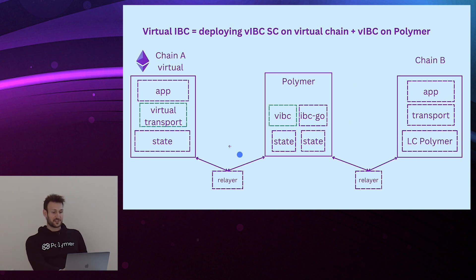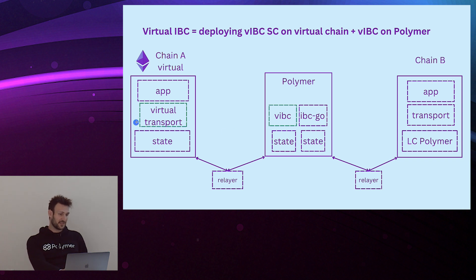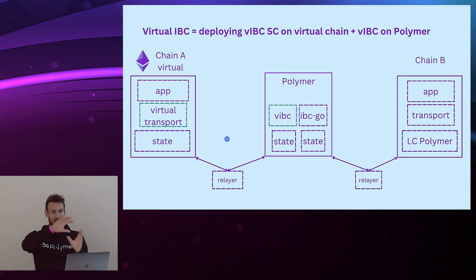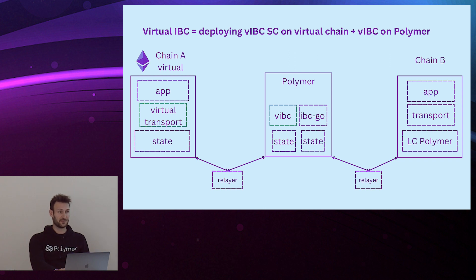This means that on the Polymer chain we have an extra module called the vIBC or virtual IBC module. On chain A — think of Ethereum, which will be shown in the demo — we simply need to deploy a number of smart contracts which enable this outsourcing. That is much simpler compared to actually developing your own full transport layer implementation of IBC.